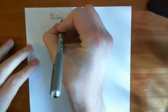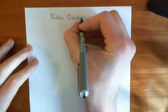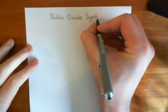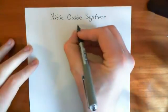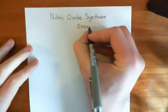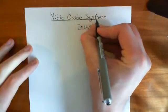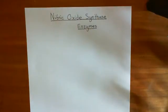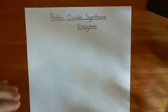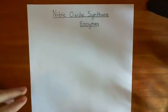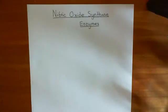Welcome to this next video in the playlist on the cardiovascular system. In this video, we're going to talk about the nitric oxide synthase enzymes in more detail than we've ever talked about them before. We are going to look at the structure of a nitric oxide synthase enzyme, the three different types, how they are activated, and in the case of NOS1 and NOS3, they're calcium-dependent, while NOS2 is calcium-independent. We'll also look at the reaction they catalyze and how their structure relates to that function.